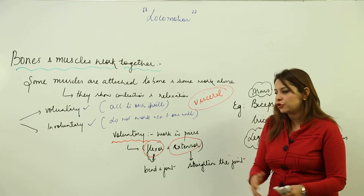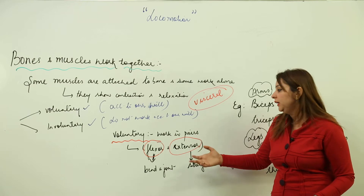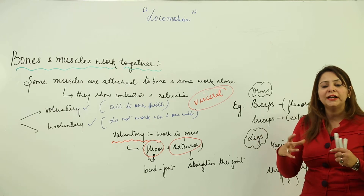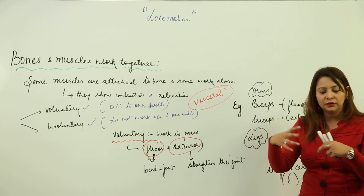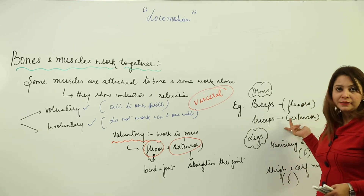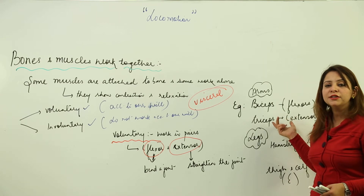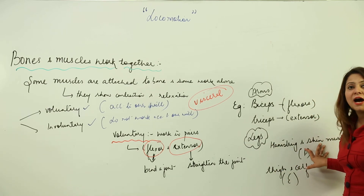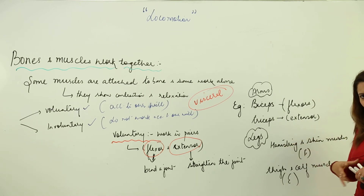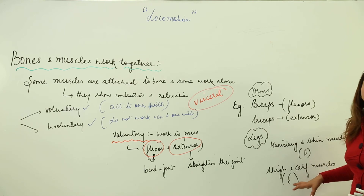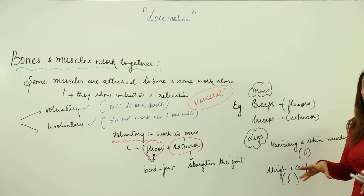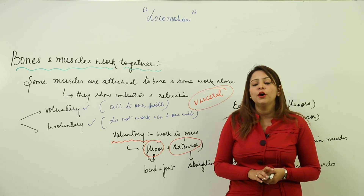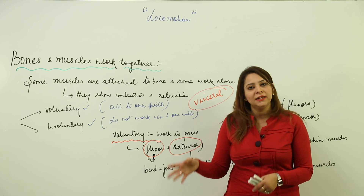For examples: in the arms, biceps are flexors — they bend the joint and bring muscles closer together — while triceps are extensors, used to straighten the joint and move muscles apart. In the legs, the hamstring and shin muscles are flexors, bending the joint, while the thigh and calf muscles are extensors, strengthening the joint and moving muscles away from each other. All voluntary muscles work in pairs of flexor and extensor.